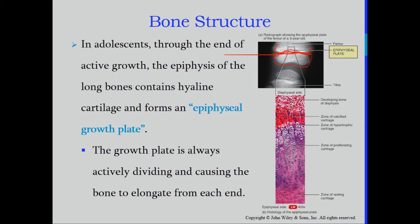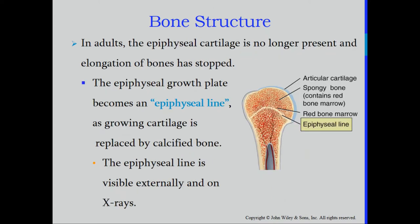The end of the bone appears separate from the metaphysis on x-ray, but it technically isn't — it's just that the cartilage doesn't show up. The growth plate is always actively dividing and causing the bone to elongate from each end. This is how we get taller as we grow until we reach puberty, when that slows down. In adults, the epiphyseal cartilage is no longer present, elongation stops, and the epiphyseal plate becomes the epiphyseal line.